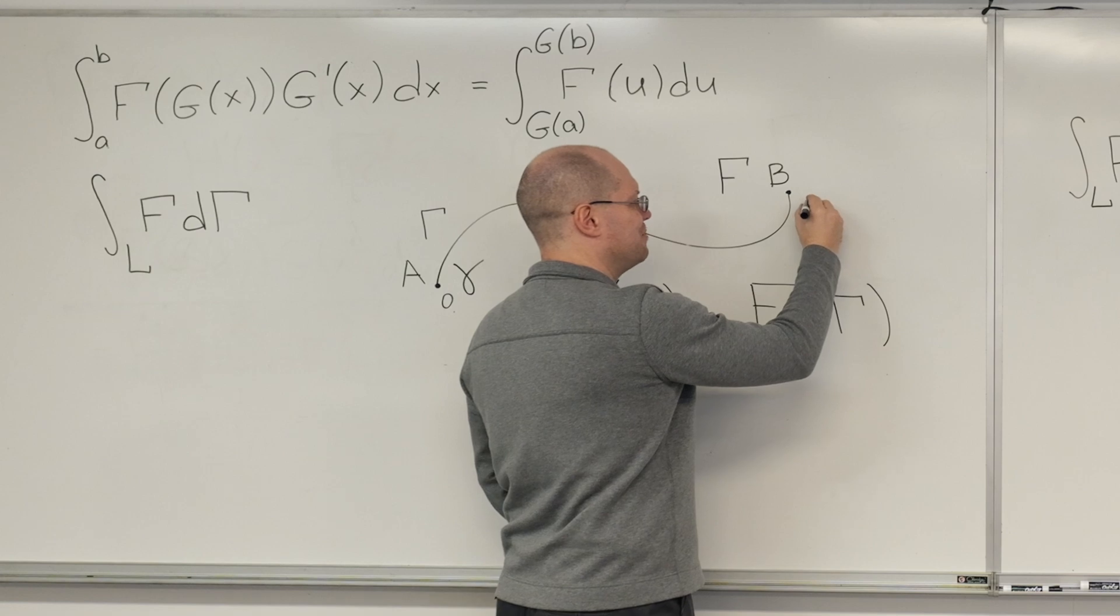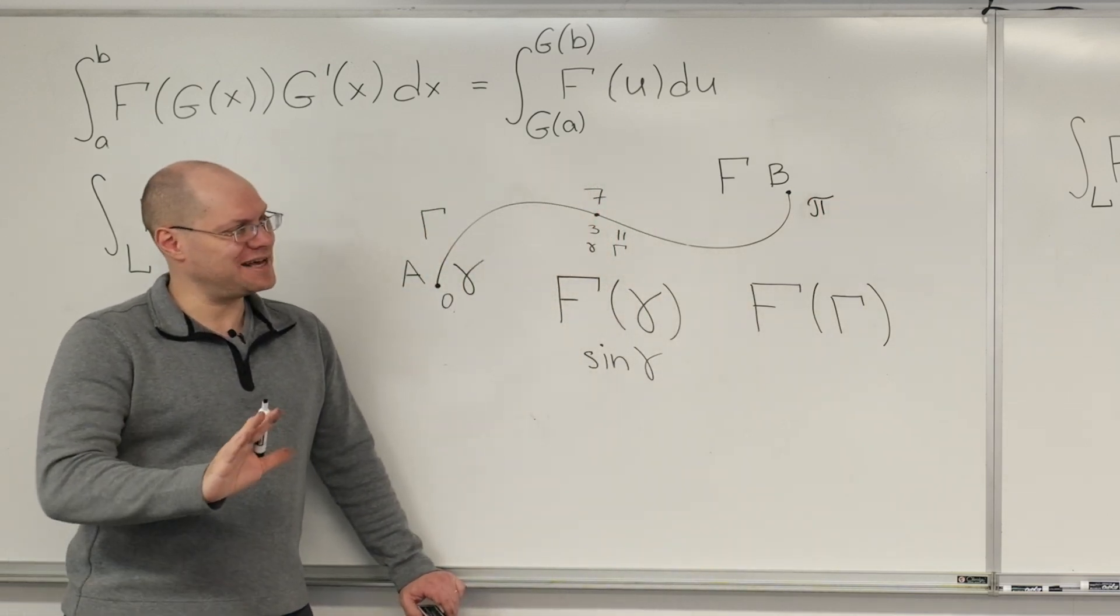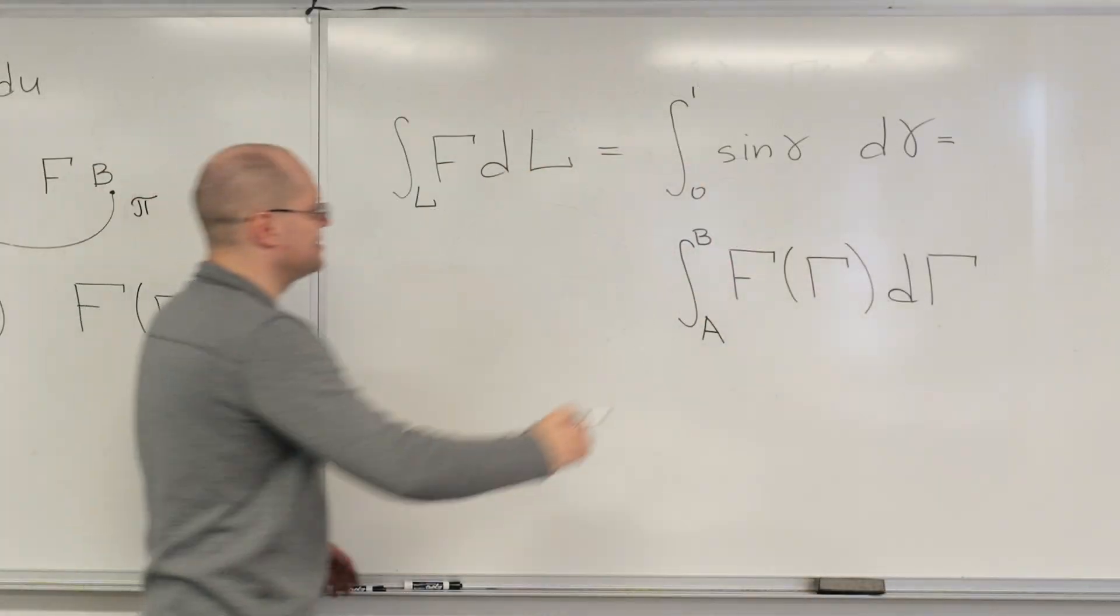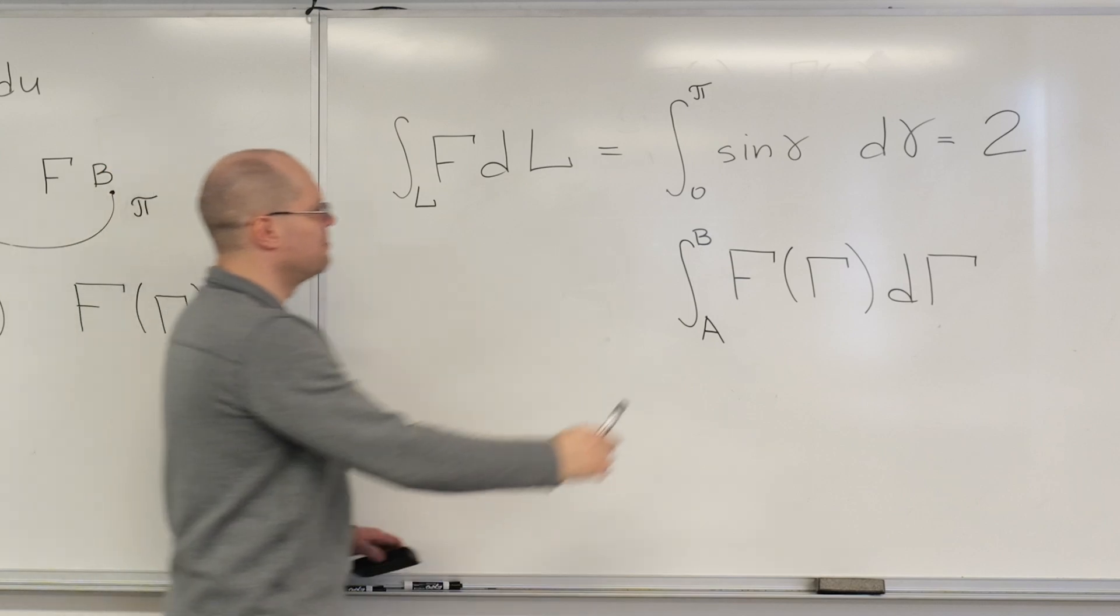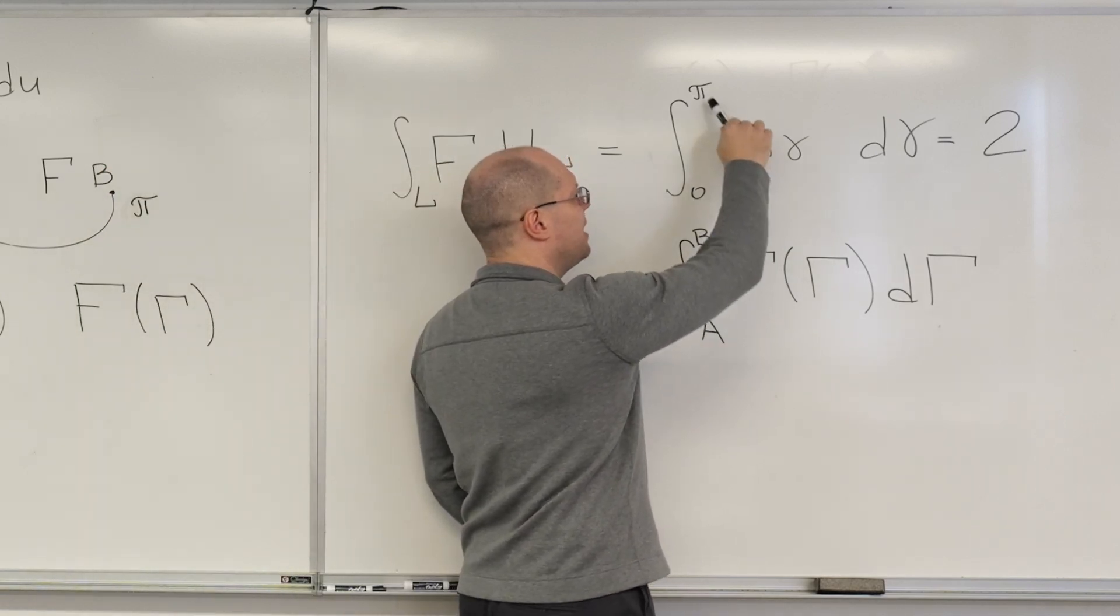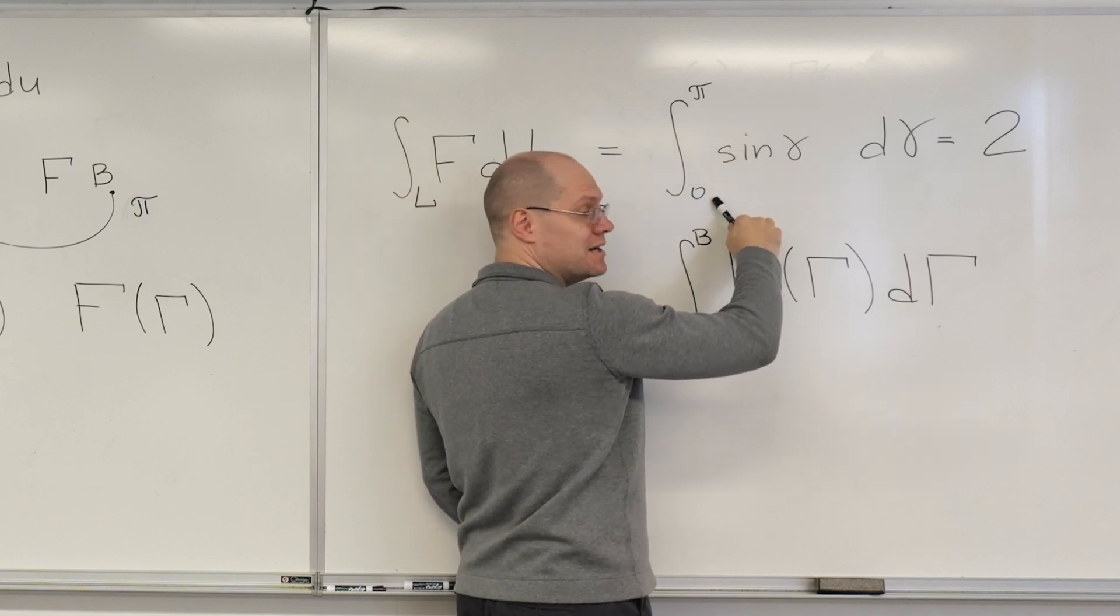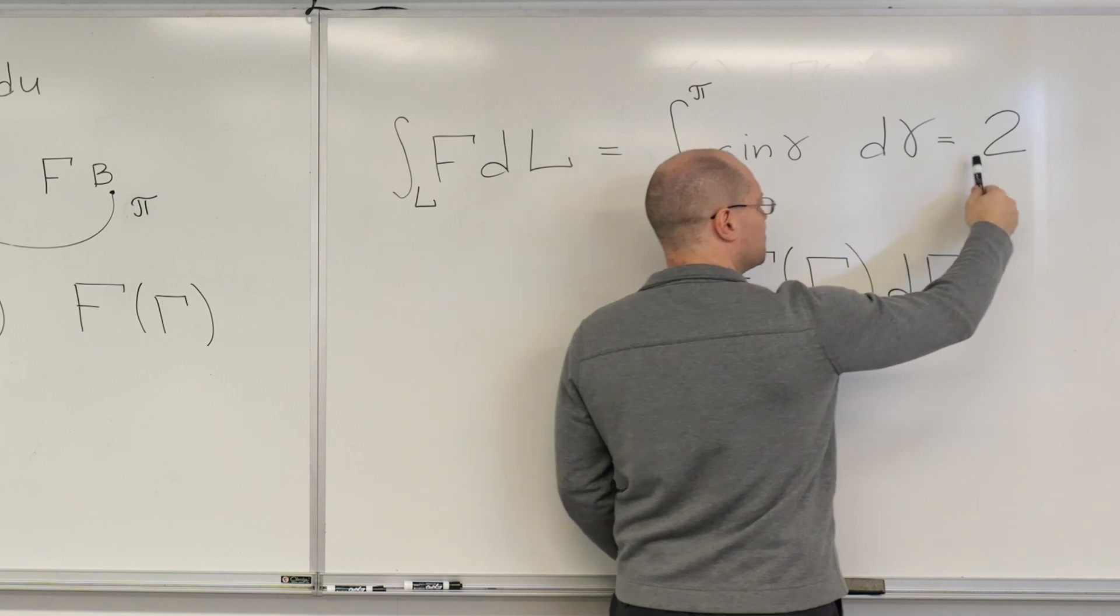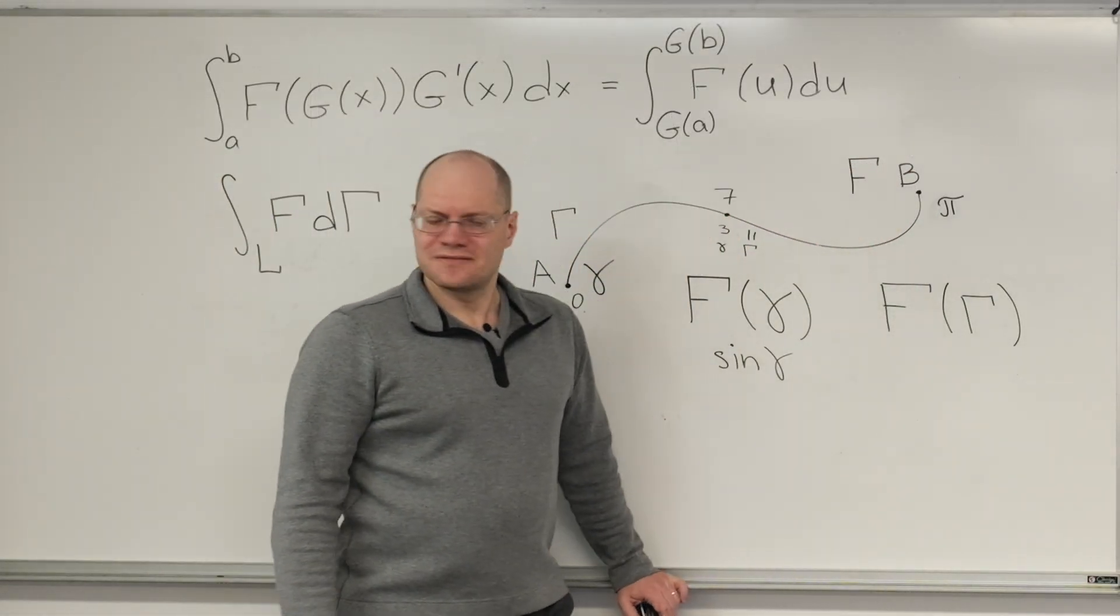So, then we end up with this. Let's pretend that it goes from 0 to pi. So, little gamma goes from 0 to pi. So, that's the hypothetical situation that I'm considering. And then the answer is 2. Right? Becomes minus cosine of gamma. You plug in pi, it's 1. You plug in 0, it's minus 1 because it's minus cosine gamma. So, it becomes 1 plus 1, 2. Beautiful. Okay.